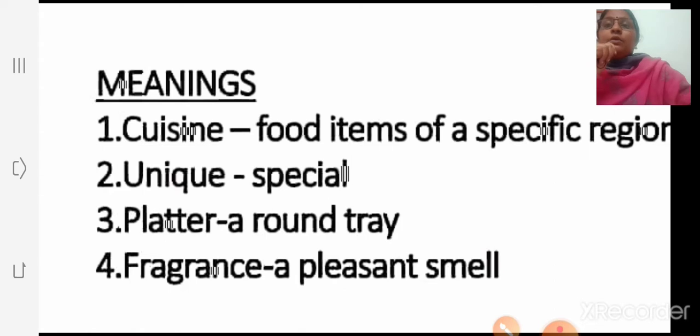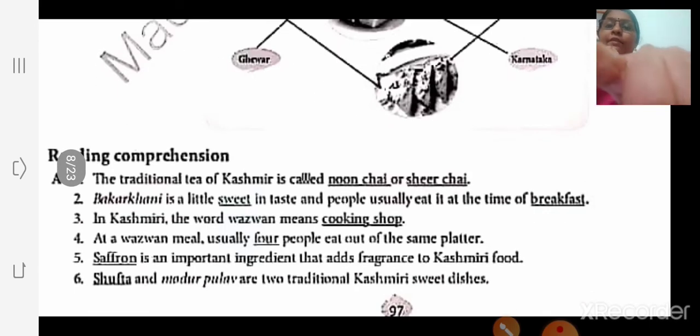From this lesson, cuisine means food items of a specific region. Unique means special. Platter is a round tray. Fragrance means sweet smell, pleasant smell. So study these four word meanings.